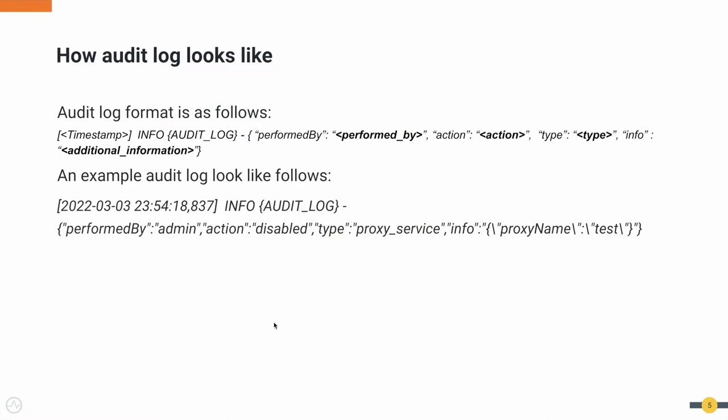Let's look at what an audit log looks like. It contains the timestamp, the user who performed the operation, the action, the type of the action, and any additional information. This is an example of a log entry printed when you try to disable a proxy service.